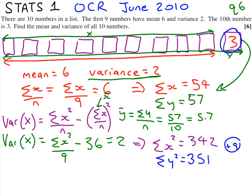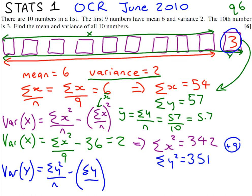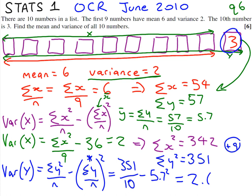Now we use our variance for y formula, which is the same but with the letters changed: sum of y squared over n, take away sum of y over n, all squared — and remember that term is just y-bar. So we get 351 divided by 10, take away 5.7 squared. If you put that in your calculator, you get, to three significant figures, 2.61.